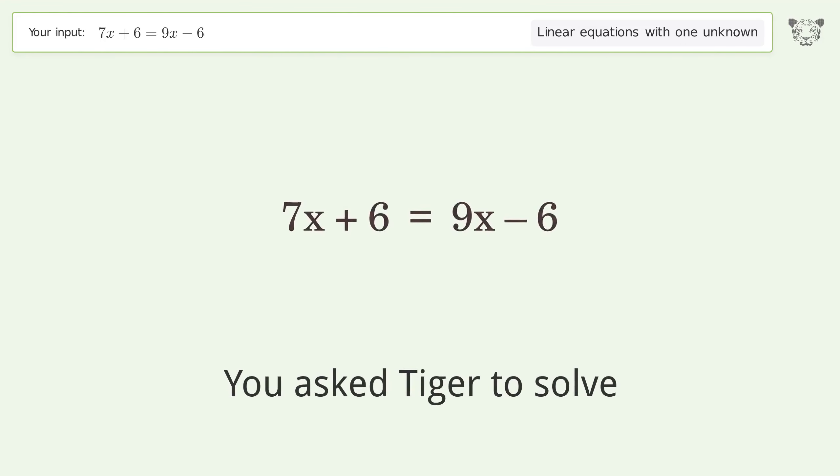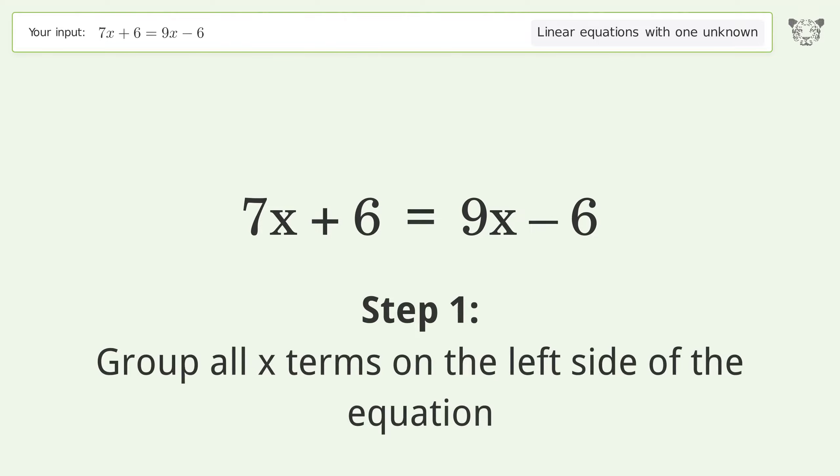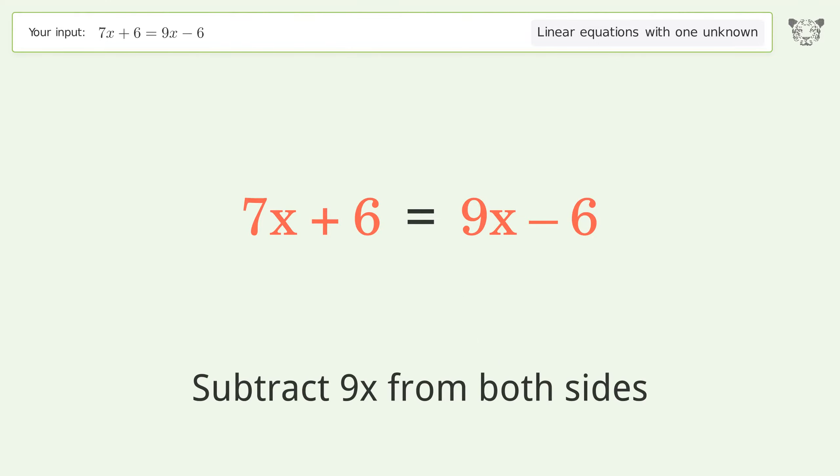You asked Tiger to solve this linear equation with one unknown. The final result is x equals 6. Let's solve it step by step. Group all x terms on the left side of the equation. Subtract 9x from both sides.